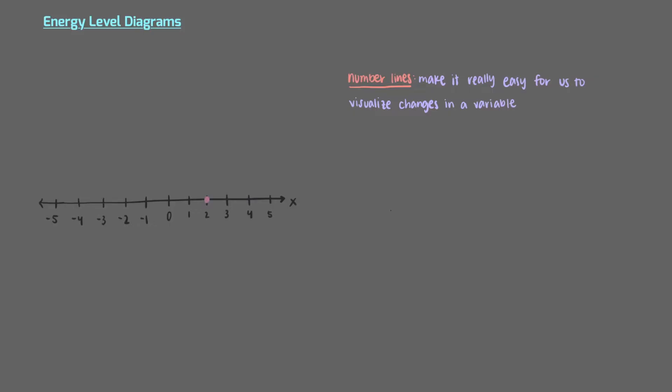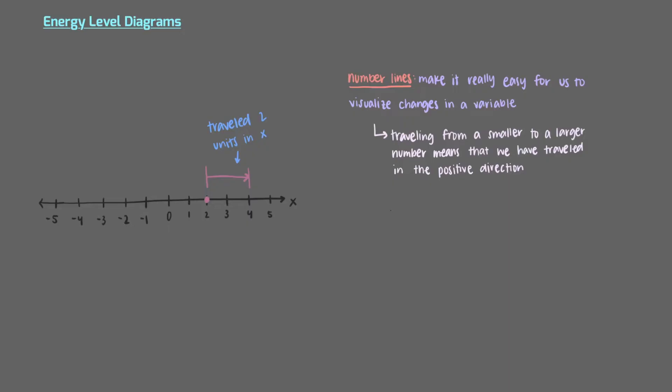For example, if we started here and traveled this far, we see that we have traveled 2 units in x. By traveling from a smaller number to a larger number, we traveled in the positive direction. What is delta x, or the change in x, if we were to start at 3 and go to minus 2?